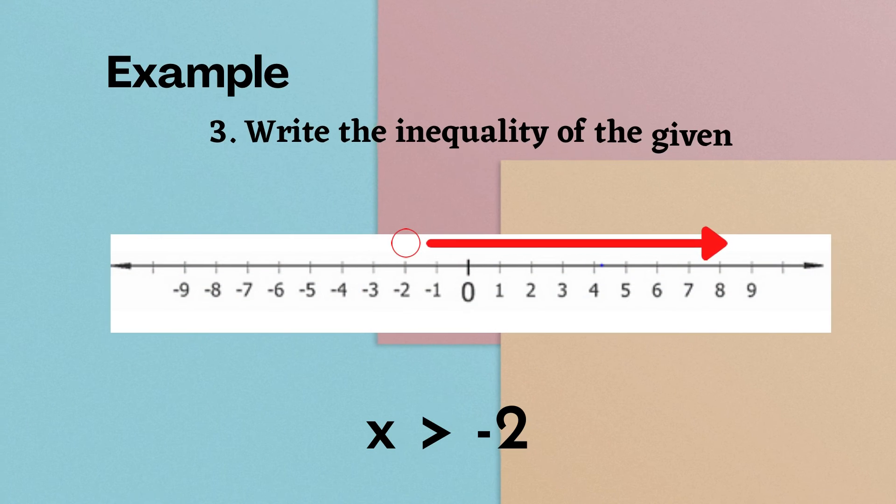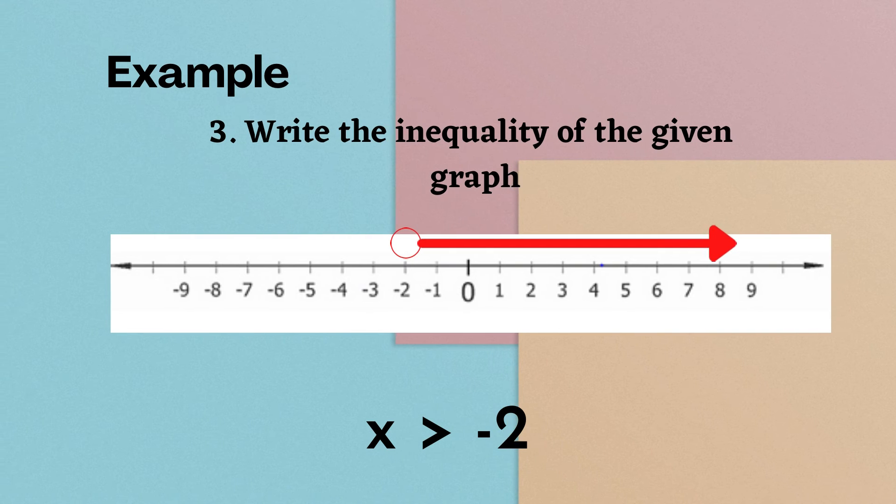Next example 3. Write the inequality of the given graph. Since the given used open circle which is located to negative 2, and the arrow is going to the right side of a number line, the inequality is x less than or equal to negative 2.